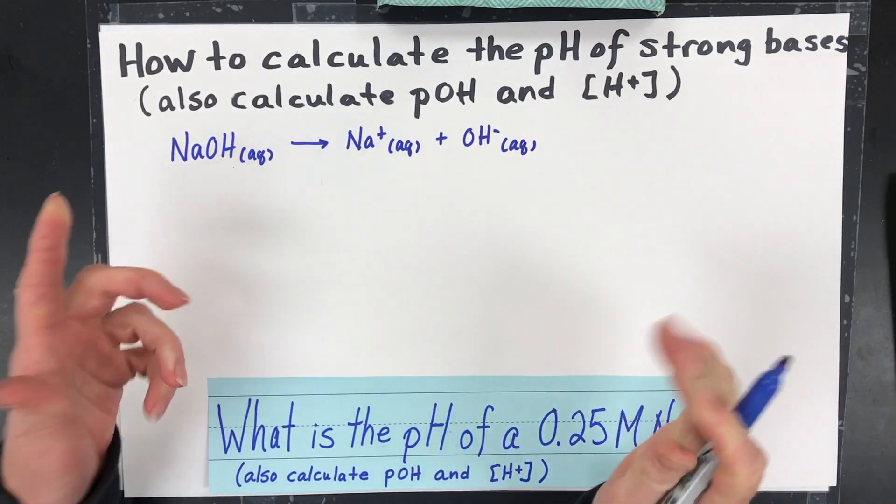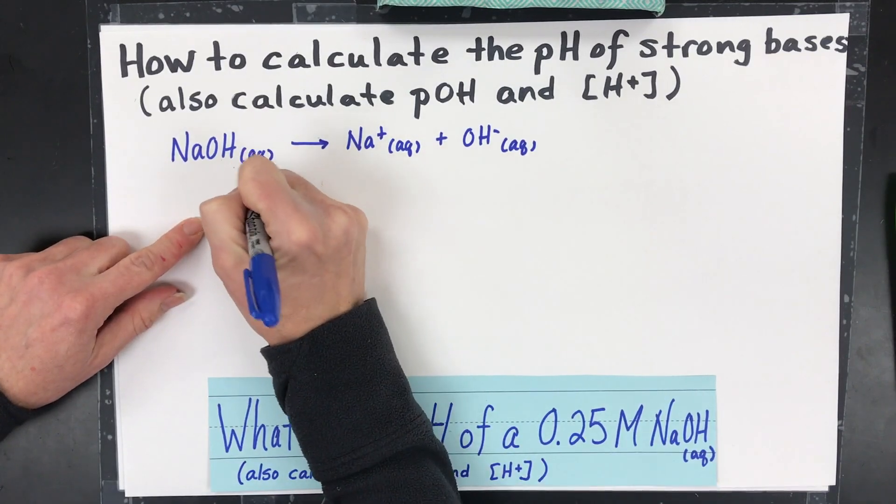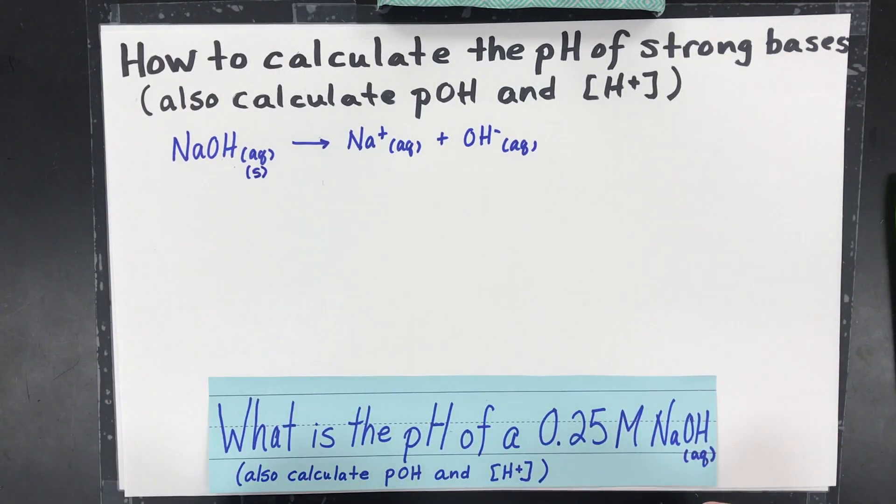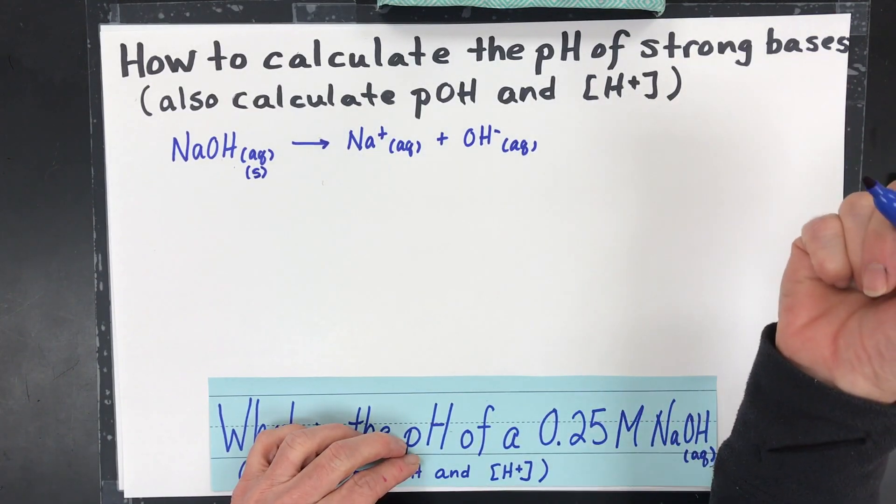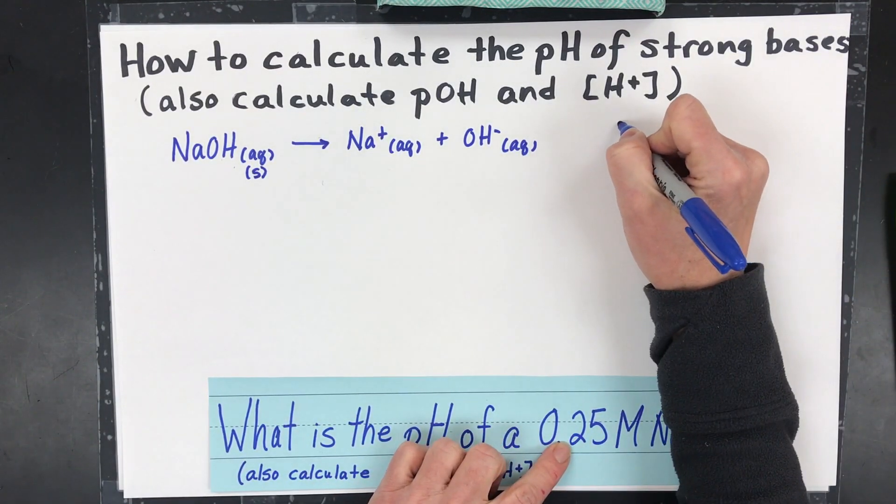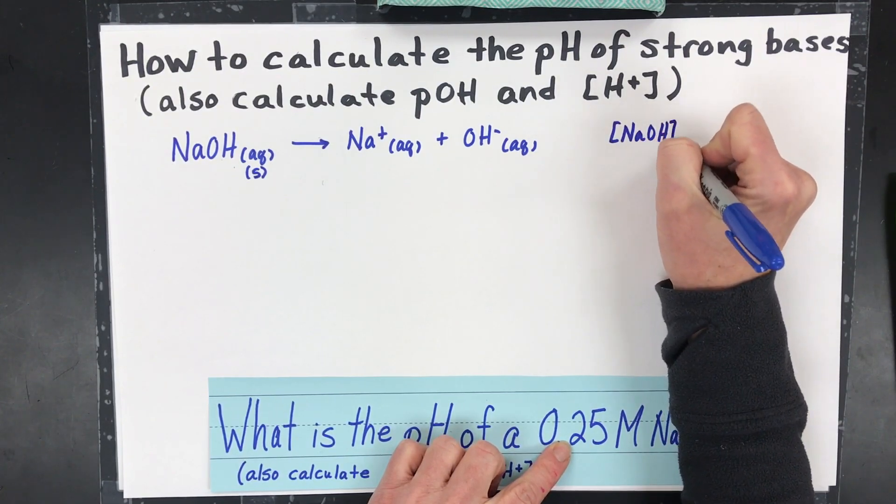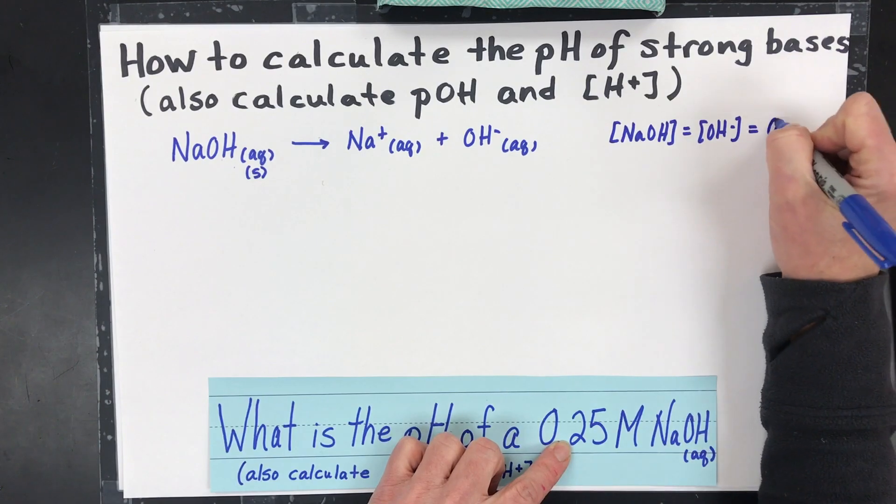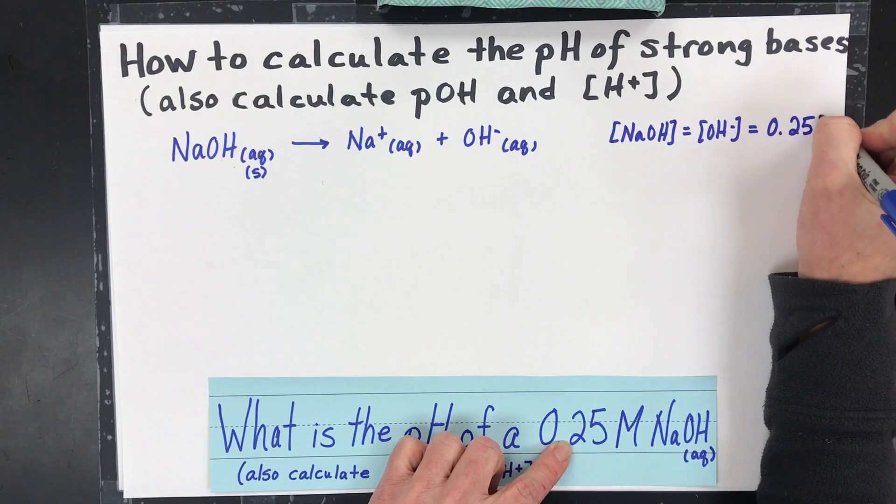For example, maybe even say I started with a solid. It would all dissolve. That's what it means. So that means if we had 0.25, if that was the NaOH, that's going to equal the OH, so the hydroxide concentration is 0.25 molar.